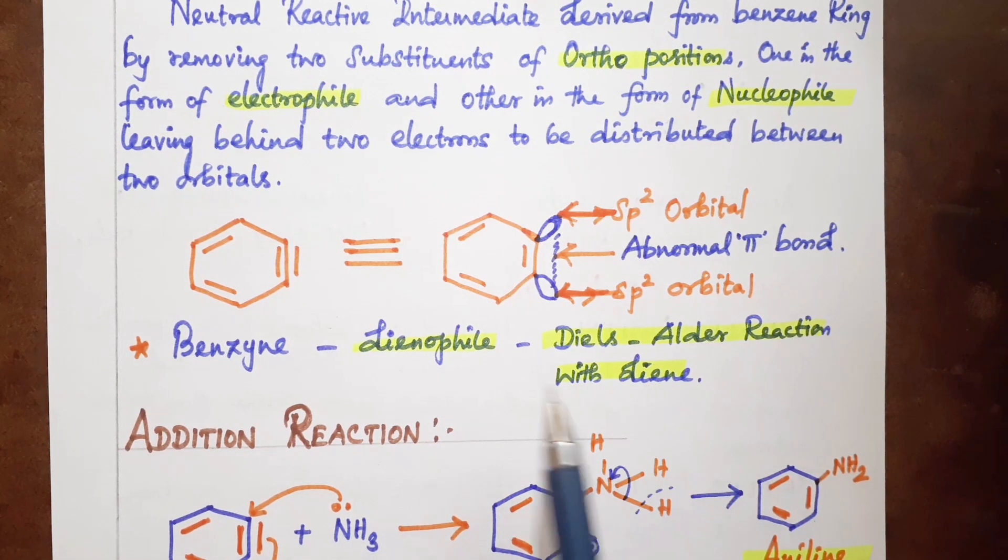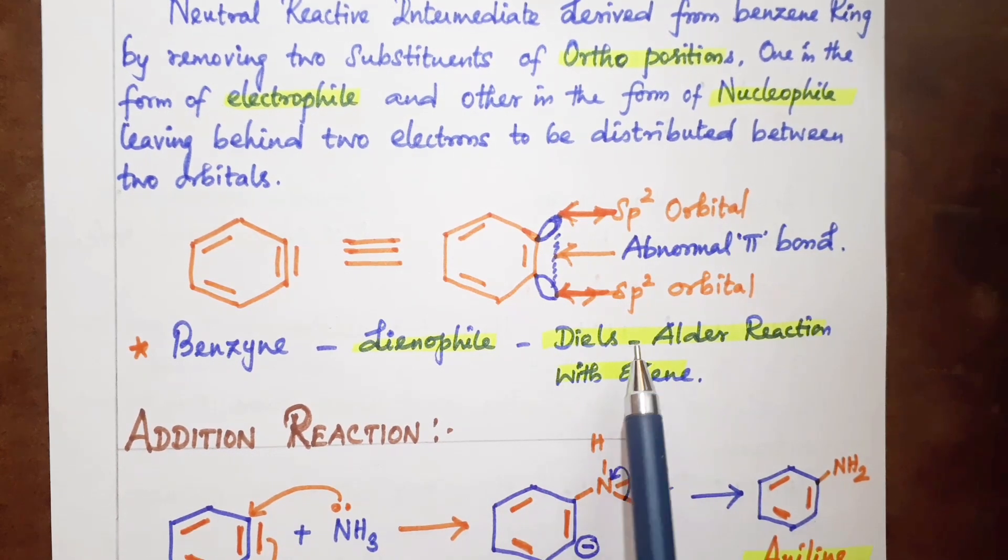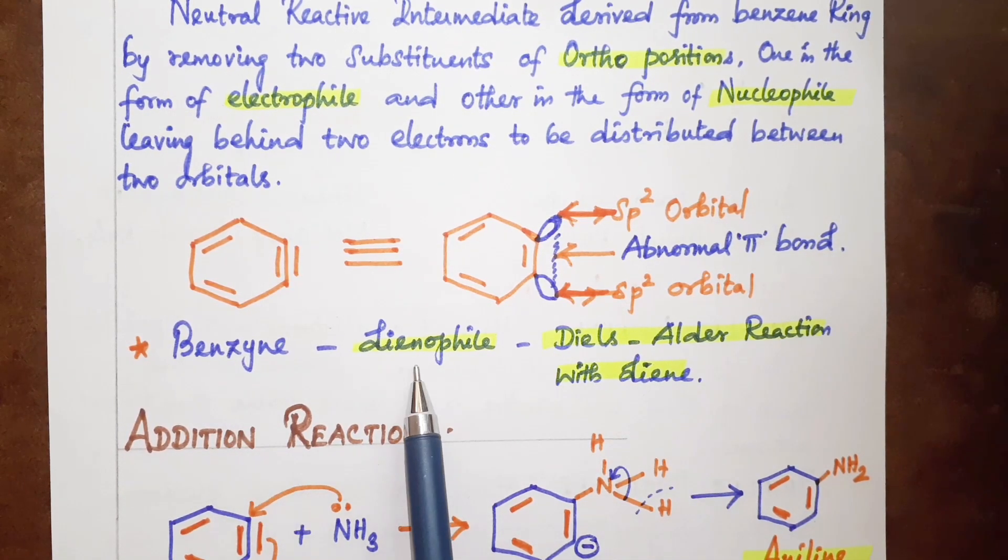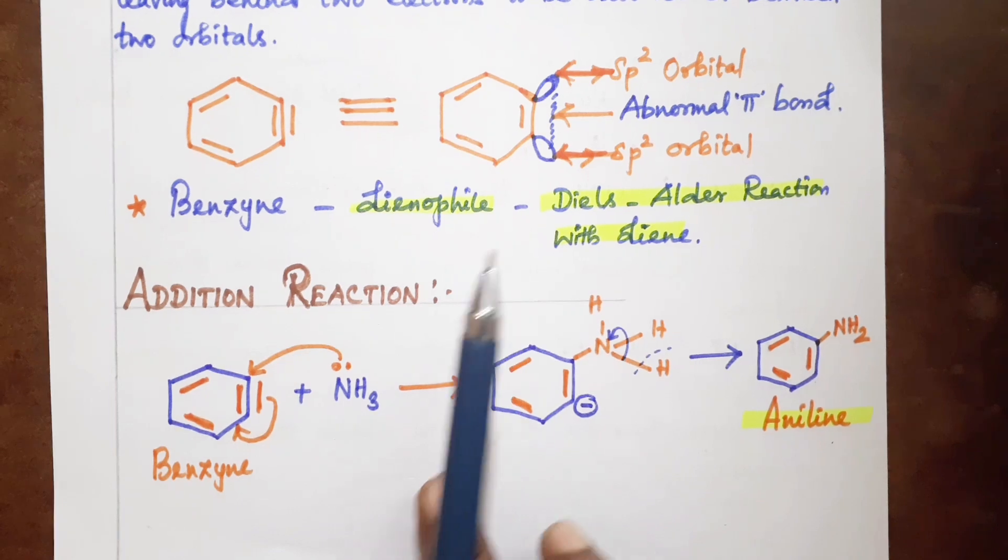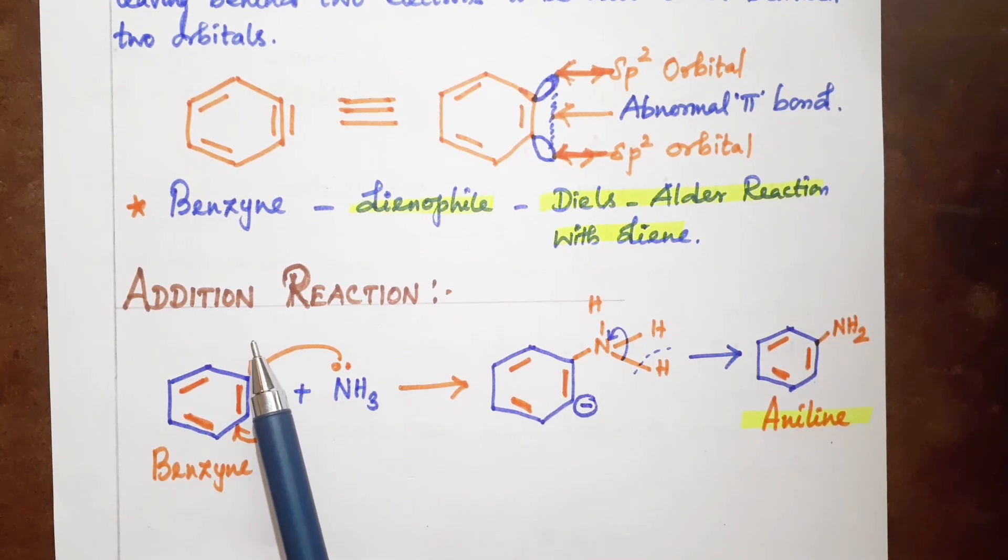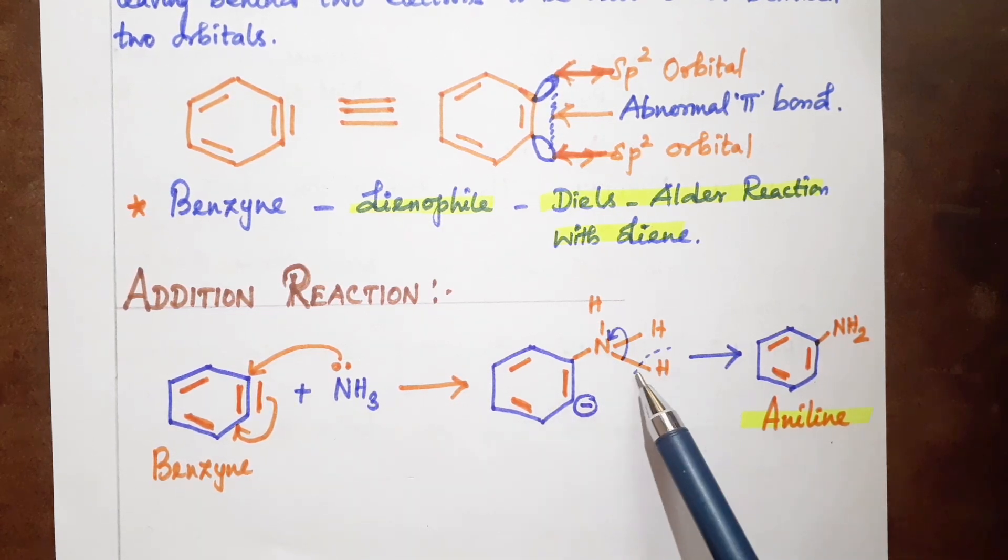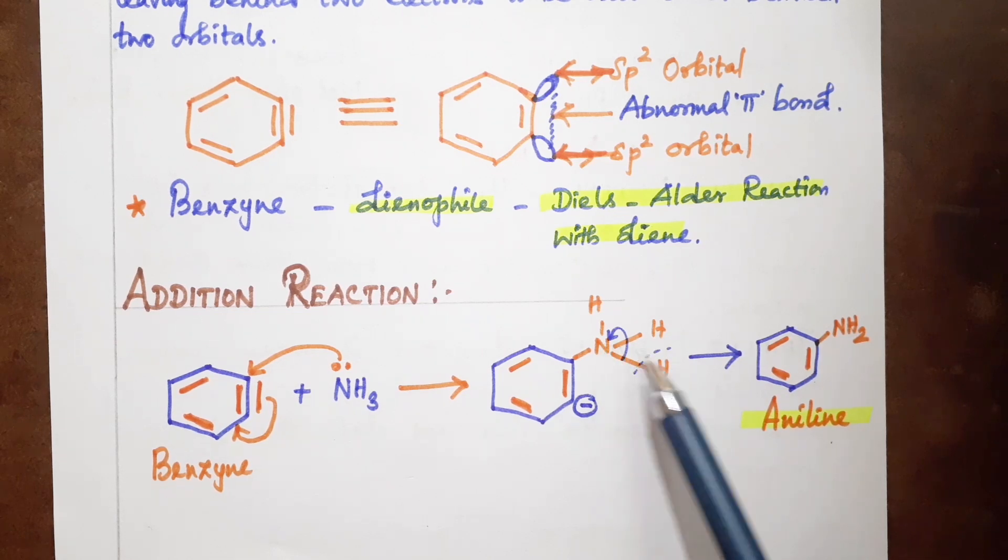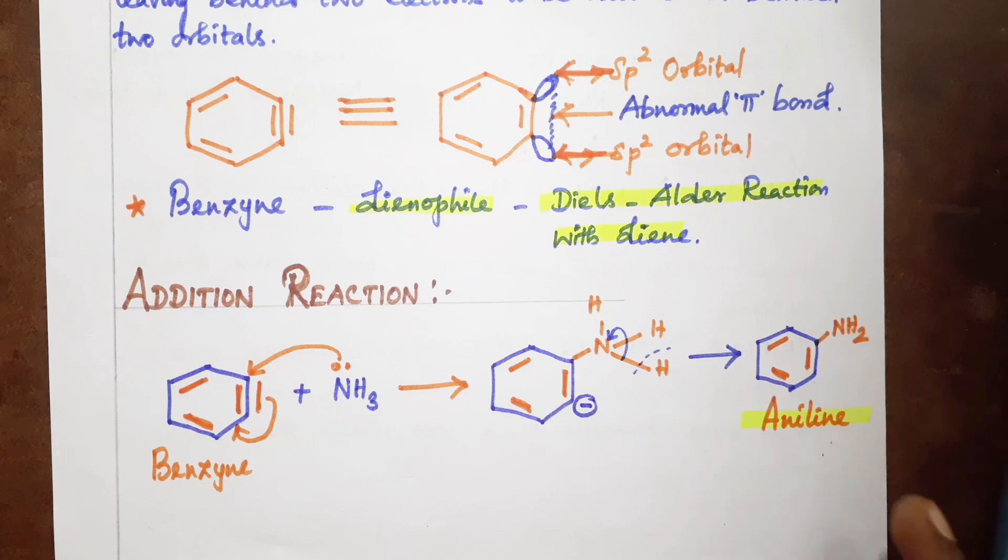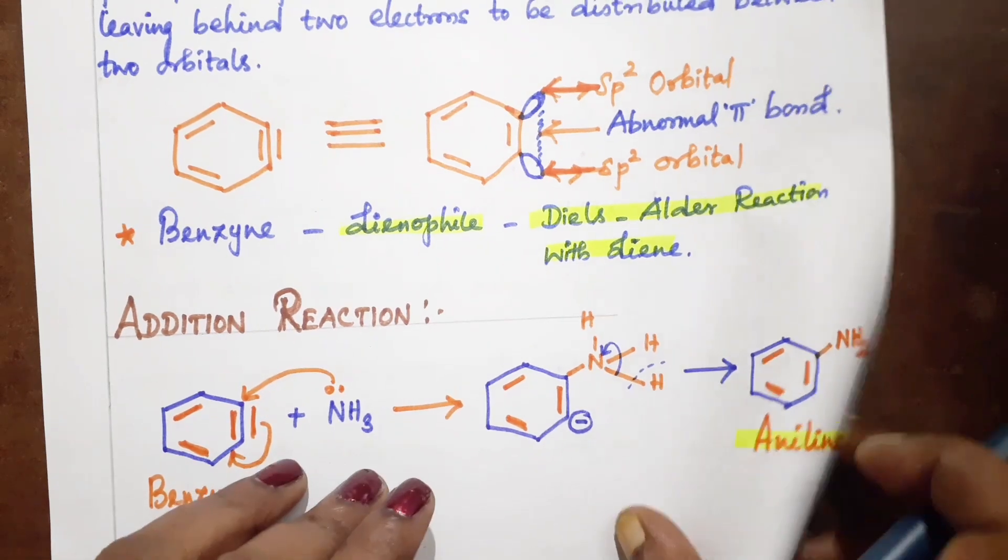Benzyne acts as a dienophile in Diels-Alder reaction, where the diene reacts with the dienophile to give an addition product. Benzyne reacts with ammonia to give an addition product, forming aniline (primary amine).